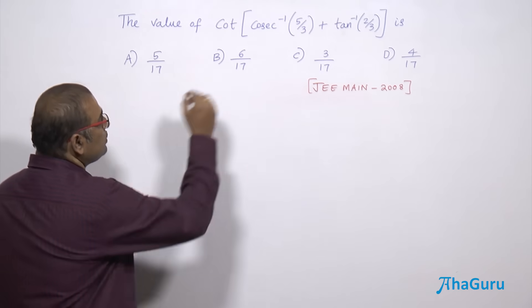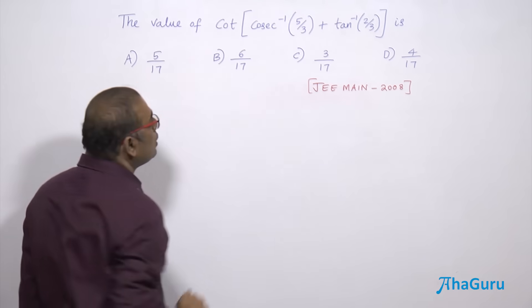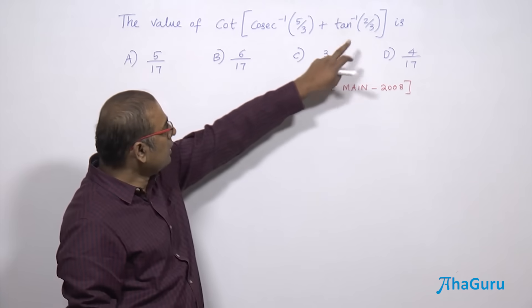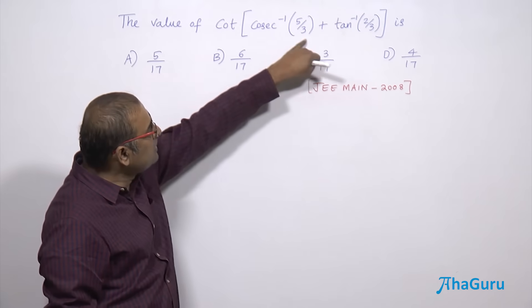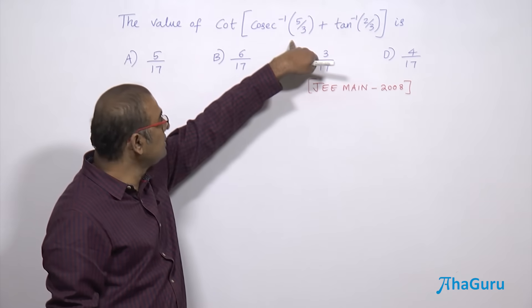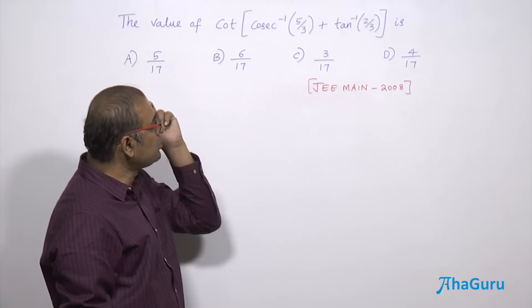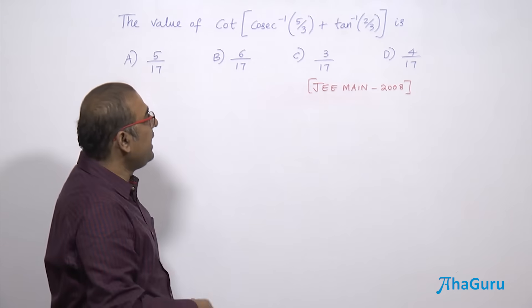First let us try to simplify the expression inside this cot. So we know that there is a tan inverse. If you are able to convert this expression to tan inverse, then we have an identity of tan inverse of x plus tan inverse of y.